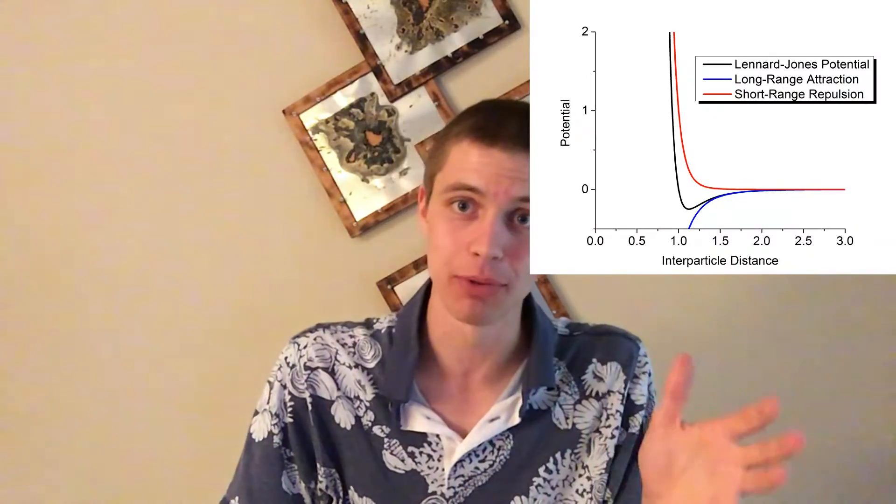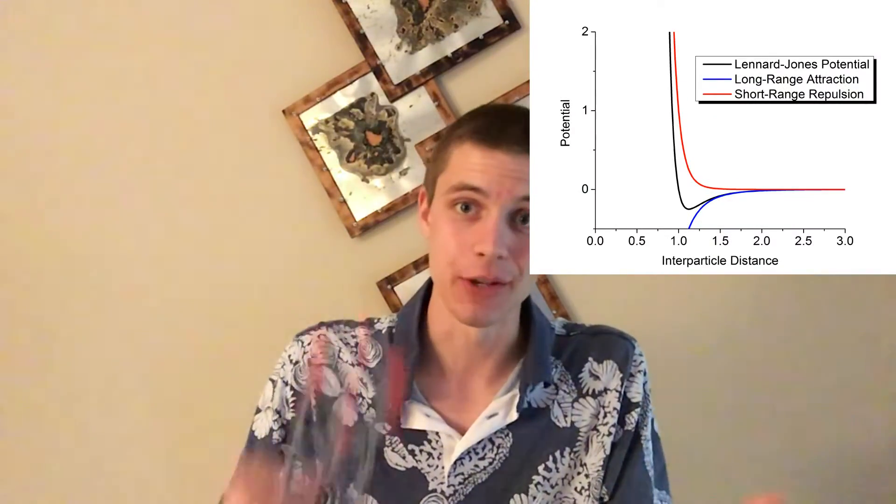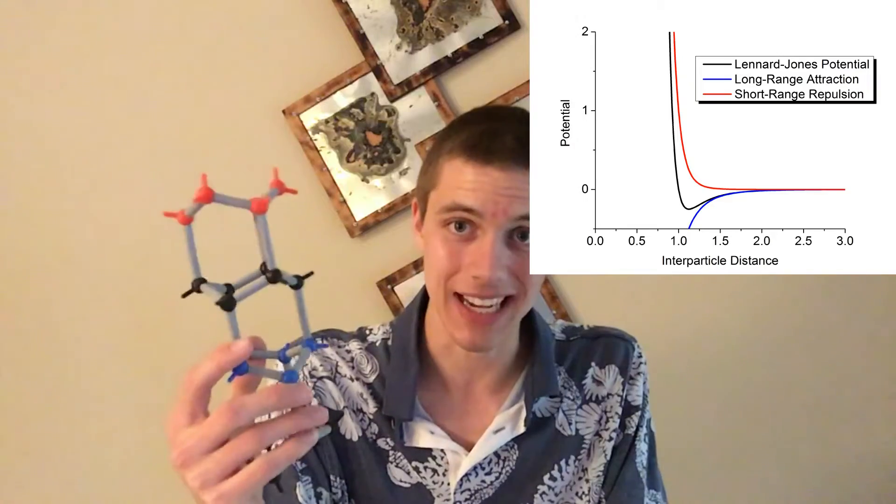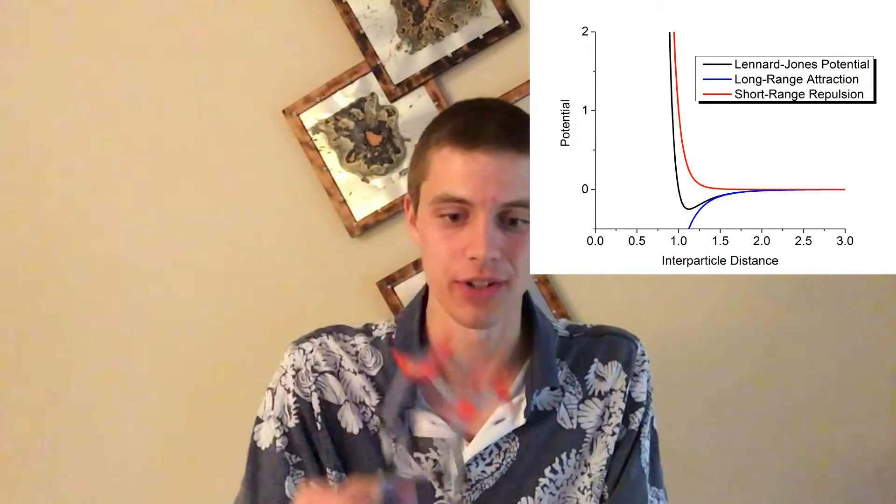In this simulation, 256 ions come together and form the cesium chloride crystal structure. Crystal growth is really interesting because it's one of the ways that nature takes really simple rules and uses them to build really complicated structures.